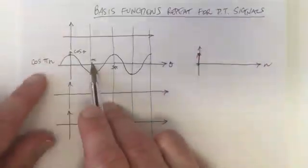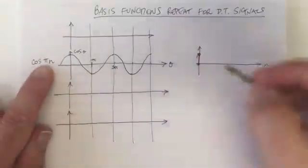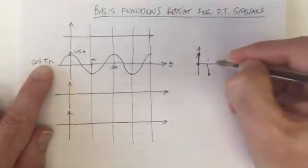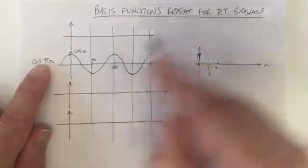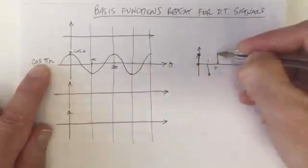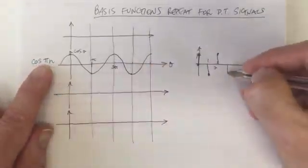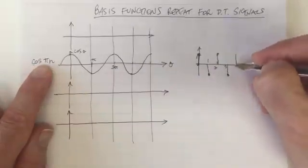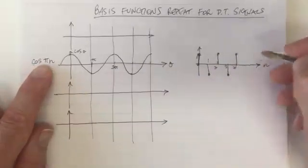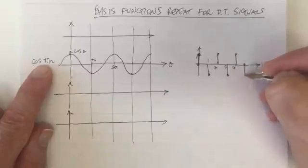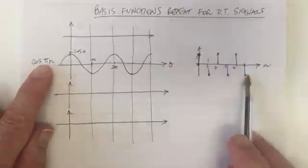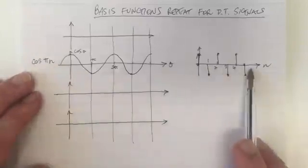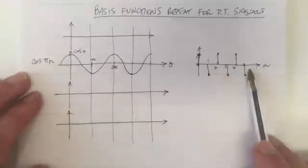So here at pi, when n equals 1, we've got minus 1. At n equals 2, we've got plus 1. At n equals 3, we've got minus 1. So this is what the discrete time version of that cos waveform is — a waveform that oscillates. This is one of the basis functions, cos(πn), and this is what it looks like in discrete time.